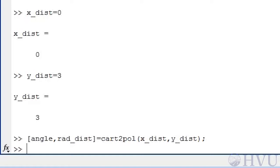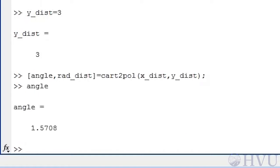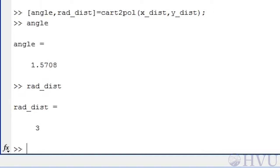To see the angular distance, type angle and press enter. The angle is pi divided by 2, which is what we'd expect. To see the other variable, type rad_dist and press enter. The radial distance is 3, also as we'd expected.